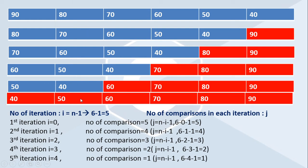How many such iterations are required? If there are six elements in our array, then we need n minus one — that is five iterations. At the end of n minus one iterations, all elements get sorted and present in their exact locations. Using this principle, we can implement our bubble sorting algorithm.